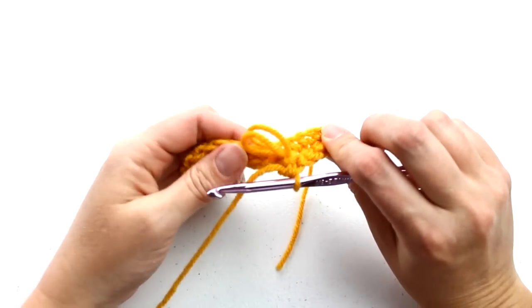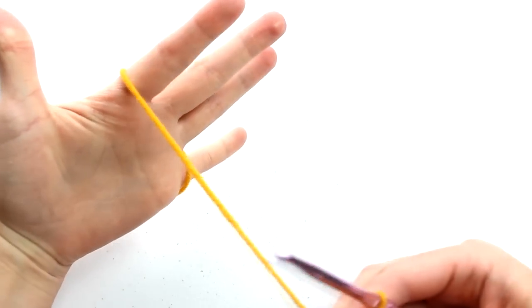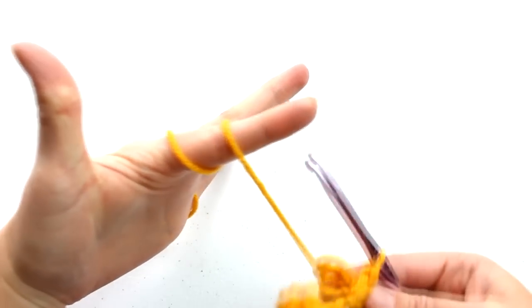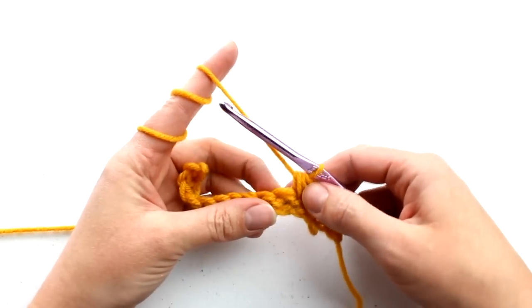Okay, so I'm going to show you this stitch again, but this time I'm going to show you how to adjust your loops to make them shorter or longer. Okay, so again we're going to wrap our yarn around our index finger two and a half times. Insert your hook into the next stitch.